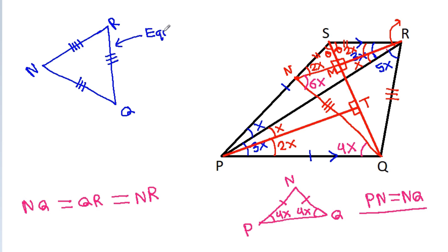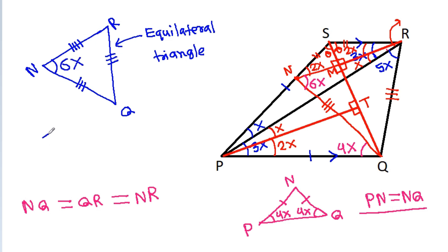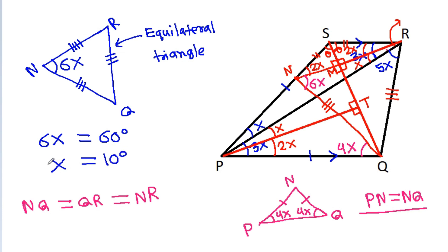So NQ equals NR, and this angle is 6x. Therefore 6x equals 60 degrees, which means x equals 10 degrees. So x is 10.